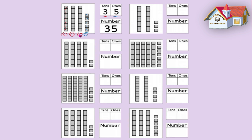And then we know we have five units — five ones. So we count the ones: 31, 32, 33, 34, 35. Well done.